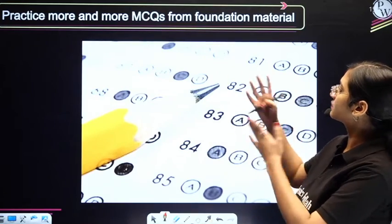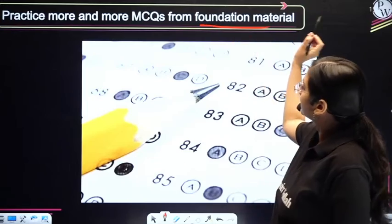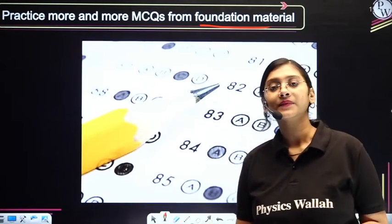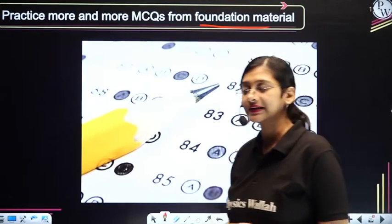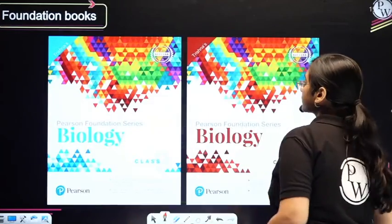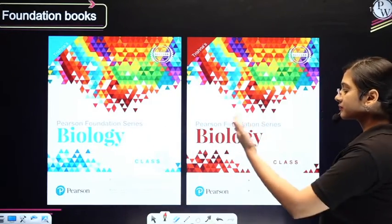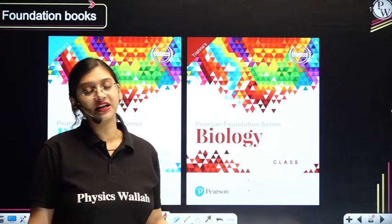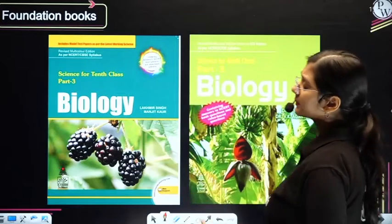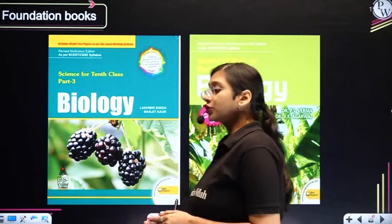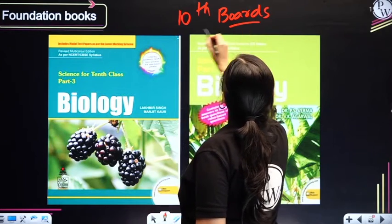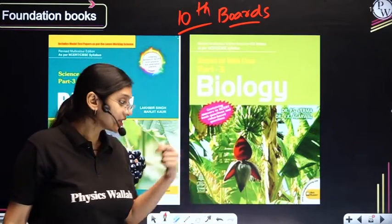Practice more and more MCQs from foundation material. Once you are done with your complete 9th and 10th NCERT science books, get a foundation study material. Good foundation books include Pearson publication — available for both class 9th and 10th — which will have extra topics coming in 11th and 12th. Similarly, Lakmir Singh and Manjit Kaur books for class 9th and 10th are helpful for boards and have many questions that help with NEET preparation.